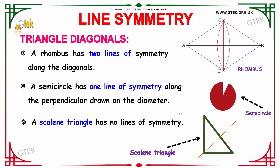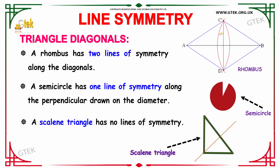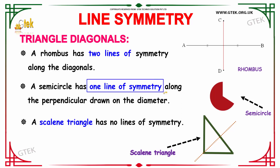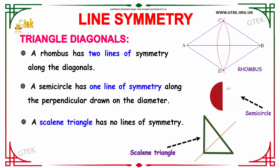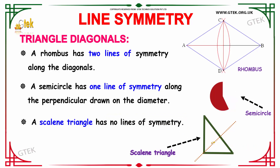Moving on, we are going to study about triangle diagonals. If you consider a rhombus, it has two lines of symmetry along its diagonals — line one and line two. Whereas a semicircle has one line of symmetry along the perpendicularly drawn diameter. A scalene triangle has no lines of symmetry because a line does not divide it into equal halves.